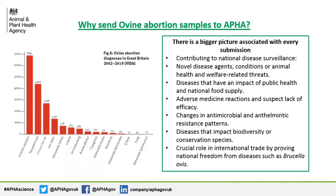As you can see from the Vida diagnosis chart on the slide, the most common causes are infectious diseases. We want to empower you to feel comfortable sampling on farm effectively so you can maximise the opportunity to gain a diagnosis for a sheep flock. Sending samples to APHA not only gives your client an answer to their problem, but also contributes to national disease surveillance, allowing us to identify trends as well as new and emerging disease threats that can impact animal and public health, national food supply and safety, and international trade by proving national freedom from diseases such as Brucella ovis.